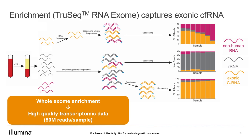Finally, we turned to enrichment — generating a library out of all cell-free RNA and then using biotinylated primers to pull out transcriptomic sequences. With this approach, 90% of reads align to human exons, while ribosomal and non-human RNA levels are consistently held in check. This allowed us to target 50 million reads per sample, which is much less than other approaches. And while we chose to focus on protein-coding signal, it's important to note that this enrichment approach is highly modular and can be tailored to capturing any RNA species of interest, including non-coding or non-human RNAs.